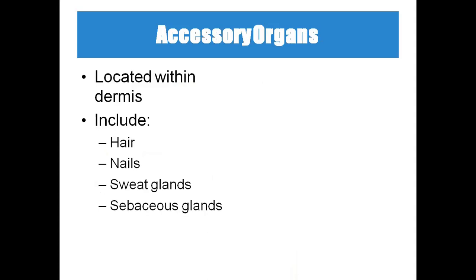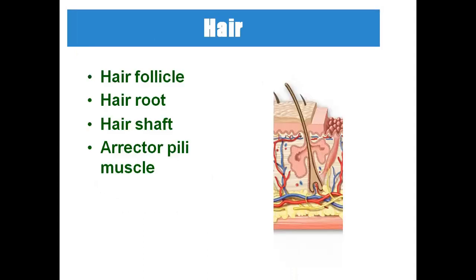Accessory organs are hair, nails, sweat glands, and sebaceous glands. Hair has these parts: hair follicle, hair root, hair shaft, and erector pili muscle. The hair grows longer from the root — deeper cells of the hair root push older cells upward, and thus the hair grows. The protein present in the hair is keratin, which gives flexibility to the cells. Melanin gives the hair its color — our hair is black because of melanin.